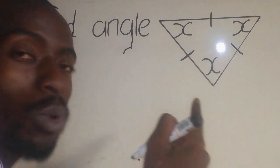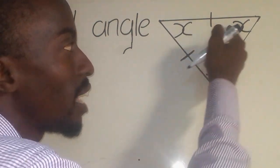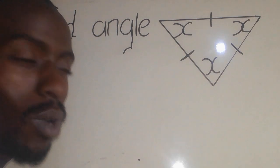Now we know that the sum of all the angles in a triangle are always equal to 180.